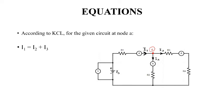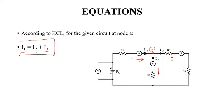If we consider node A, then at node A we can say that I1 should be equal to the sum of I2 and I3, because I1 is the only incoming current whereas I2 and I3 are the outgoing currents. For verification of Kirchhoff's Current Law, we need to prove whether I1 is equivalent to the sum of I2 and I3 or not, and for doing so we need to follow a certain procedure.